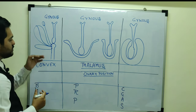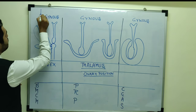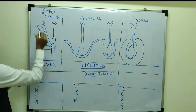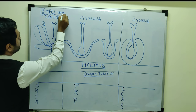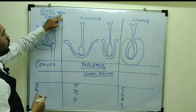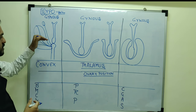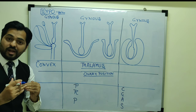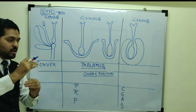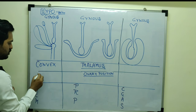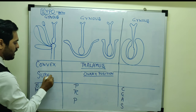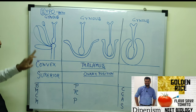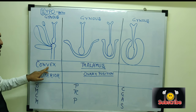Since all the floral whorls are present below the gynoecium, this type of flower is called a hypogynous flower, where 'hypo' means below. So calyx, corolla, and androecium are all present below the gynoecium. If every floral whorl member is below the gynoecium, that means the gynoecium is at the topmost position. So the ovary is at the topmost position, and therefore the ovary position is called superior ovary. In entrance exams, if asked about ovary position in a hypogynous flower, remember it is superior, and the thalamus shape is convex.